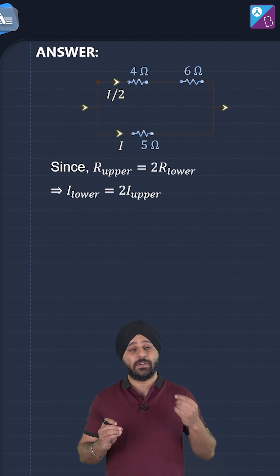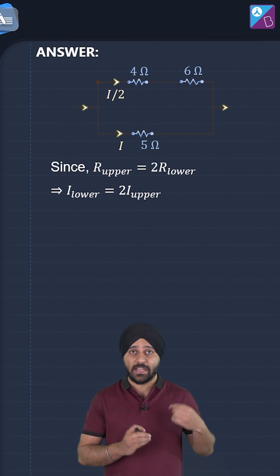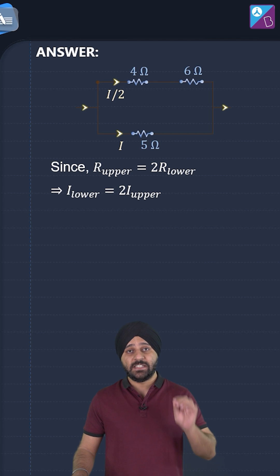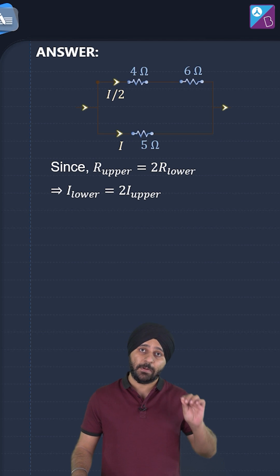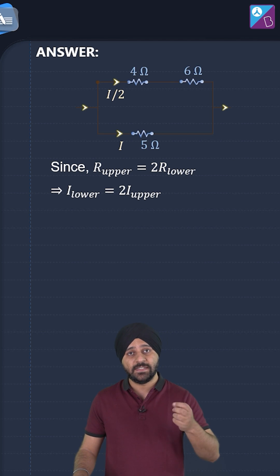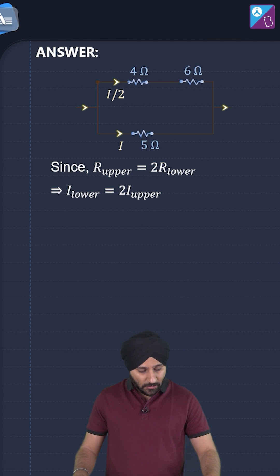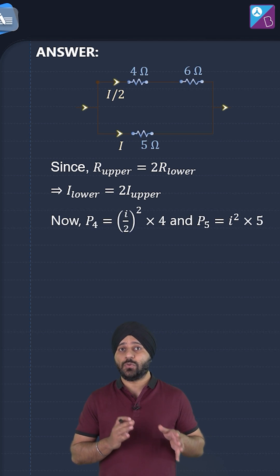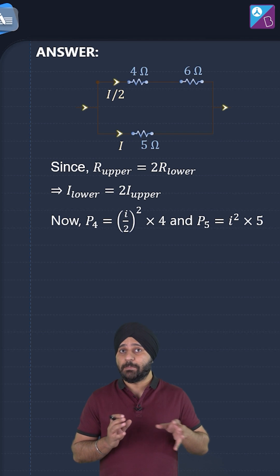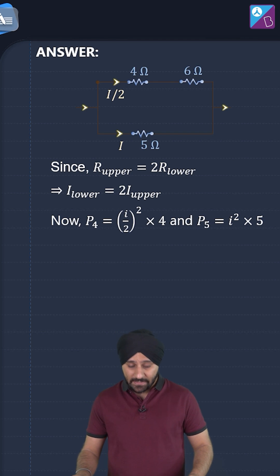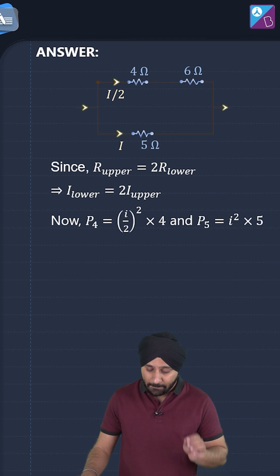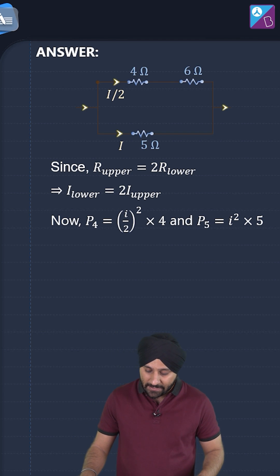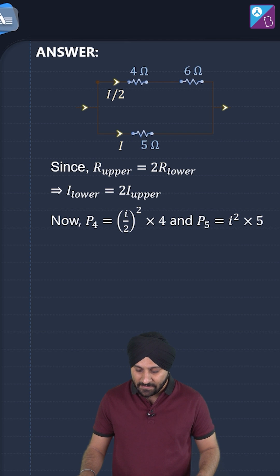Current divides such that higher resistance gets less current. Using the power formula P = i²R, the power at the 4 ohm resistor is P4 = (i/2)² × 4, and the power at the 5 ohm resistor is P5 = i² × 5.